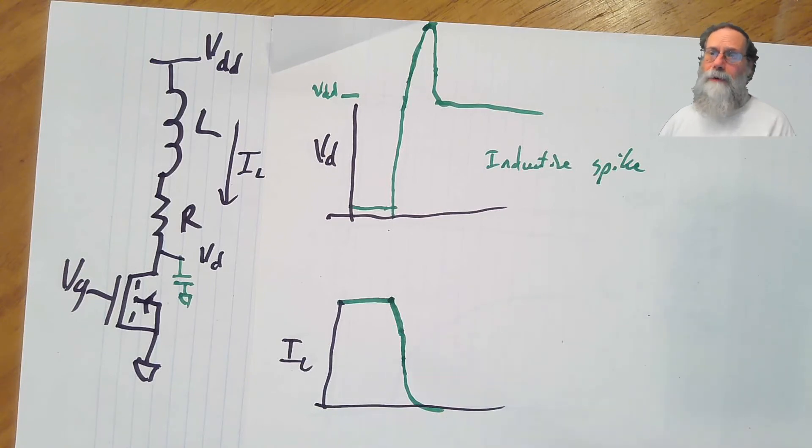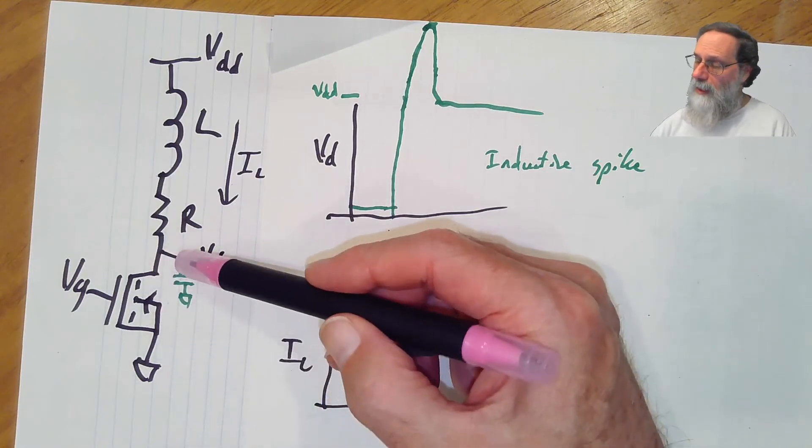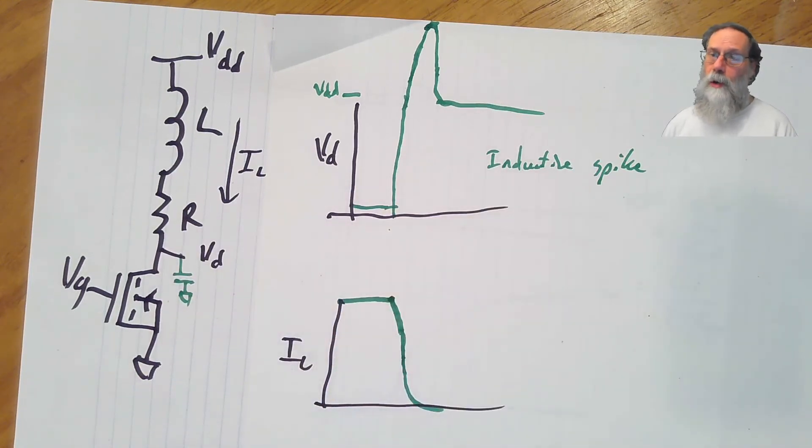We don't usually want to have those huge spikes running in our electronics. A lot of our electronics isn't designed to handle huge voltages. It's much cheaper to handle low voltages. So there is something we can do about that, and that is if we have some place for this current to go, it doesn't have to just charge a capacitor if it could be taken away somewhere, then we wouldn't have to have such a big spike.